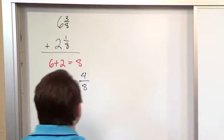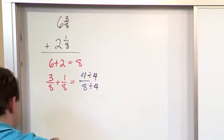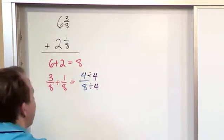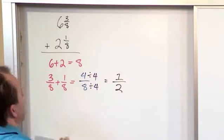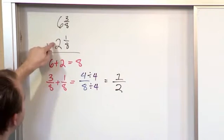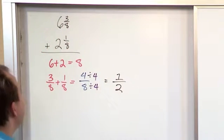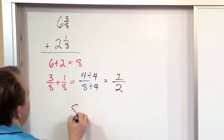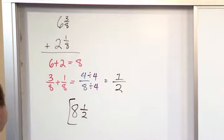And then in order to simplify four-eighths, we divide by four and divide by four. And so the final answer here is going to be four divided by four is one, eight divided by four is two. So this is one-half. So we add the whole numbers together and we get eight. We add the fractions together and we get one-half. So the final answer here is going to be eight and one-half pounds.